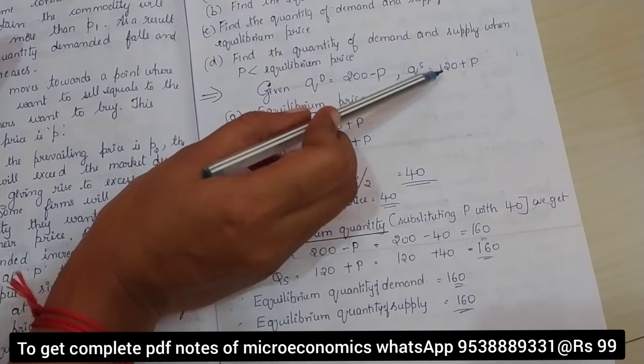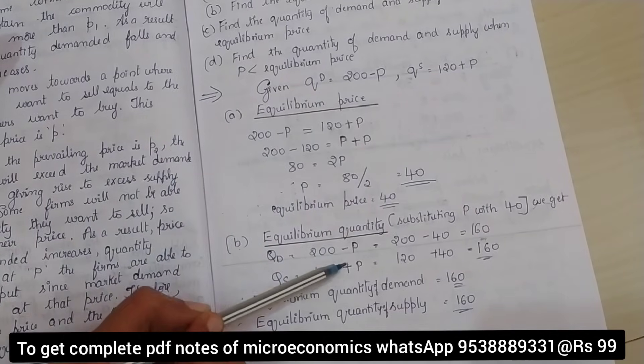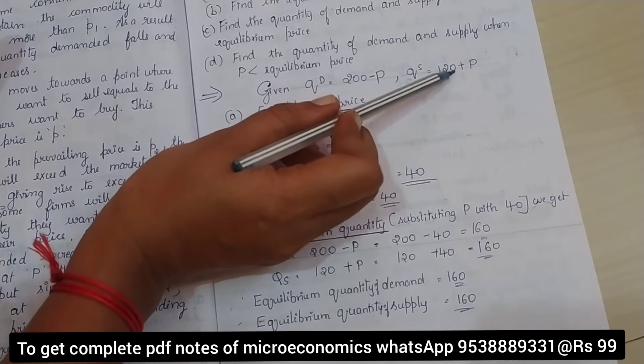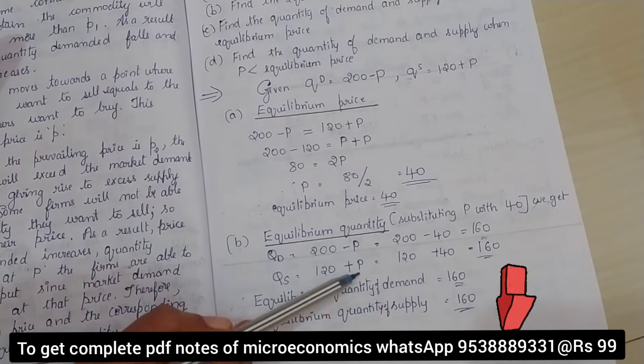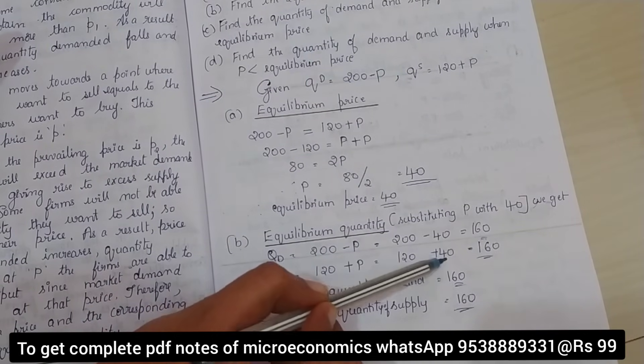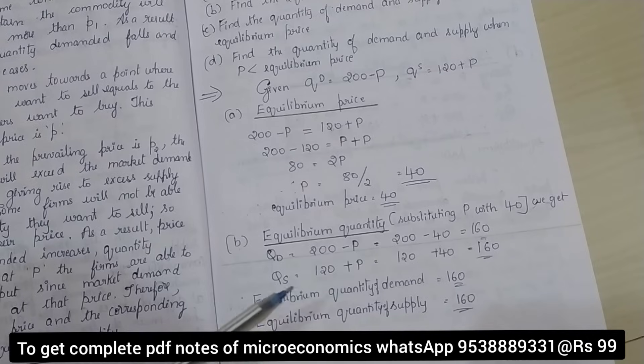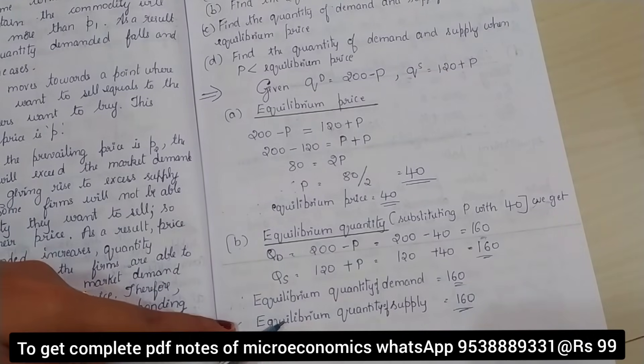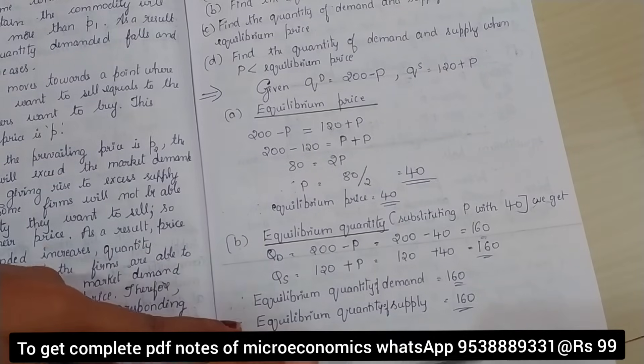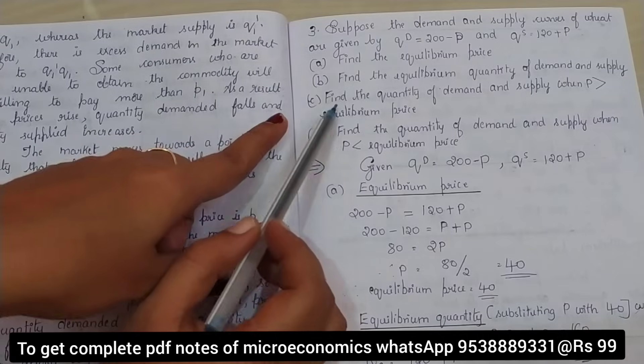Similarly, quantity supplied equation is 120 plus P. Note the signs correctly. It is 120 plus P. So 120 plus 40, the answer is 160. Therefore, equilibrium quantity of demand is equal to 160, and equilibrium quantity of supply is also equal to 160.